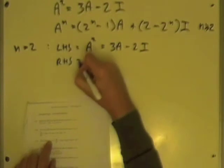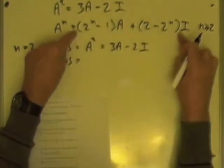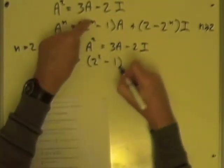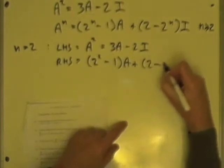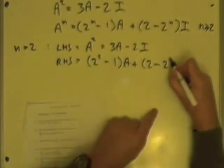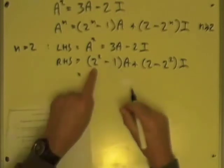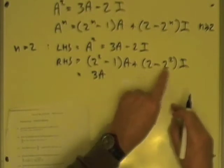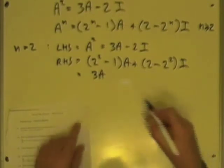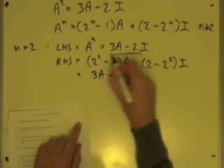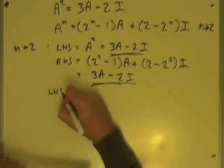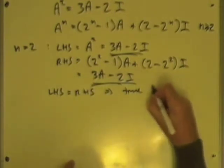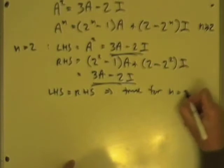From the right hand side, I have this expression, which when n equals 2 gives 2 to the power 2 minus 1 times A, plus 2 minus 2 to the power 2 times I. That is 2 to the 1, which is 2, take away 1 gives 3, so it is 3 lots of A. And 2 take away 4 is minus 2, so minus 2I. Both sides are the same — the left hand side equals the right hand side — so it is true for n equals 2.